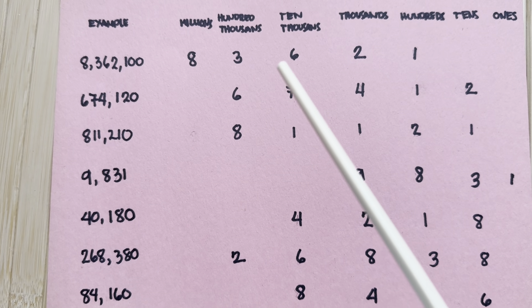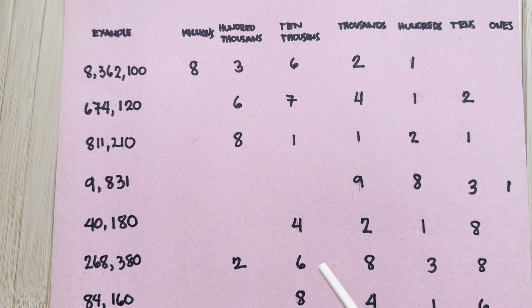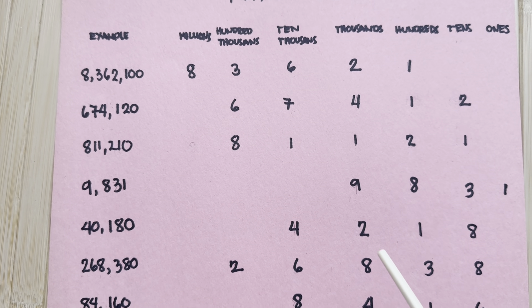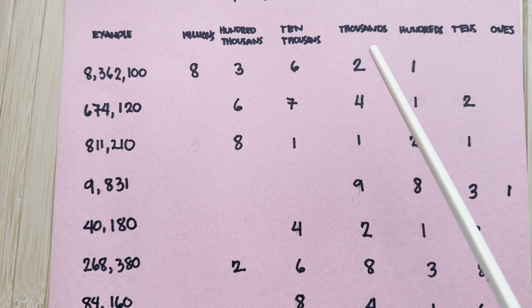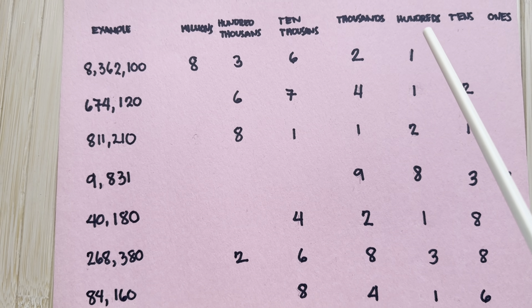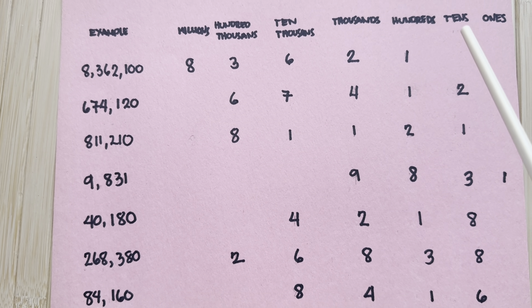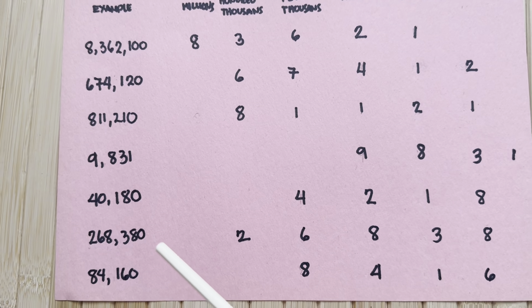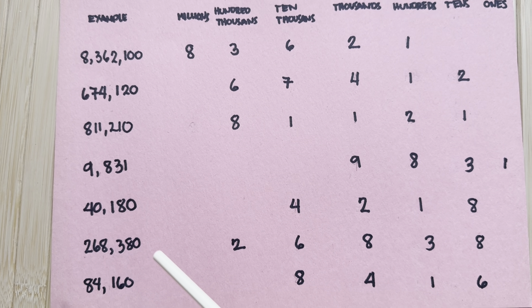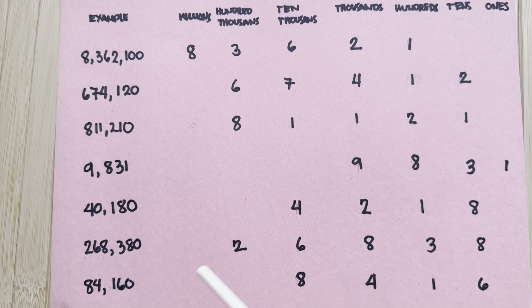Two hundred thousands plus six ten-thousands plus eight thousands plus three hundreds plus eight tens is equal to two hundred sixty-eight thousand three hundred and eighty. And now the last example.